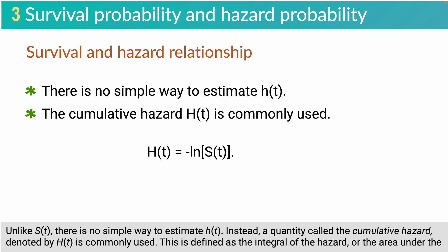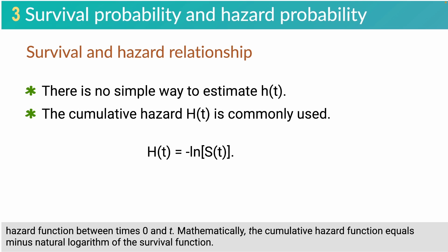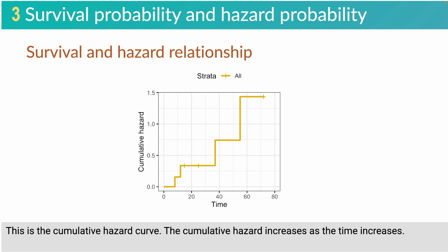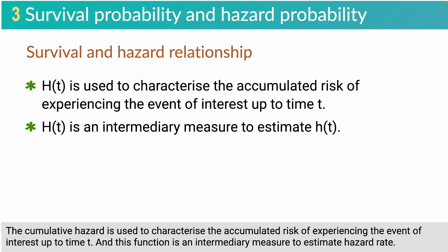Unlike survival probability, there is no simple way to estimate hazard rate. Instead, a quantity called the cumulative hazard, denoted by capital H(T), is commonly used. It is defined as the integral of the hazard function, or the area under the hazard function between times 0 to t. The cumulative hazard function equals minus the natural logarithm of the survival function. This cumulative hazard curve increases as time increases, and it is used to characterize the accumulated risk of experiencing the event of interest up to time t. This function is an intermediary measure to estimate hazard rate.